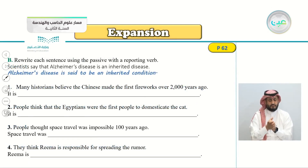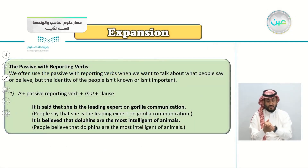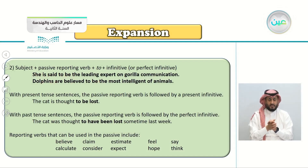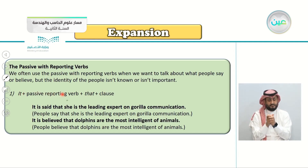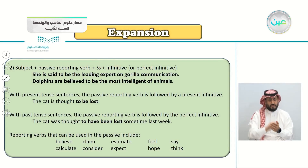Exercise B: rewrite each sentence using the passive with a reporting verb — such as 'it is said,' 'it is believed,' or 'she is said to be,' 'dolphins are believed to be,' and so on. The structure is: 'It + passive reporting verb + that + clause,' or 'Subject + passive reporting verb + to + infinitive or perfect infinitive.'